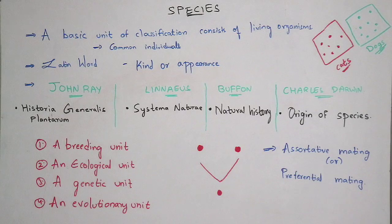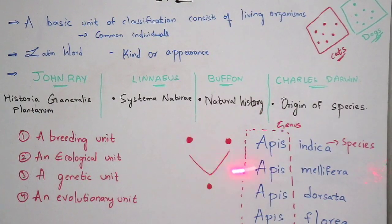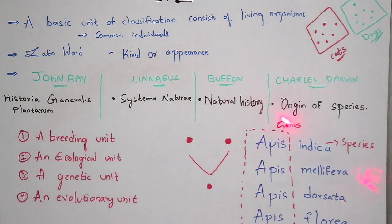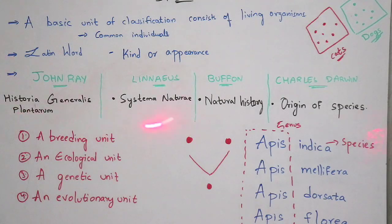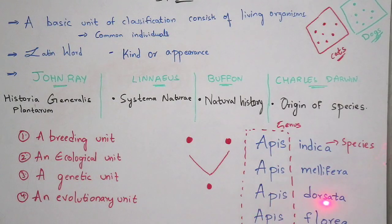The scientific name consists of two words — the first word indicates the genus and the second word indicates the species. So the four examples — Apis indica, Apis dorsata, Apis mellifera, and Apis florea — all come under the same genus Apis but consist of different species. The common names are: Apis indica is the normal honey bee, Apis dorsata is the giant honey bee, and Apis florea is the dwarf honey bee.